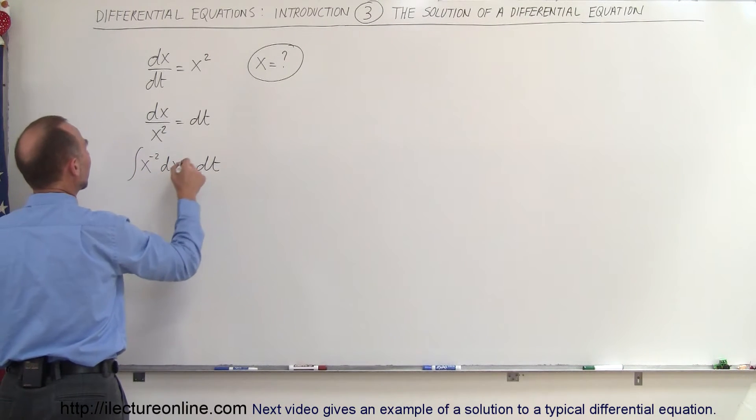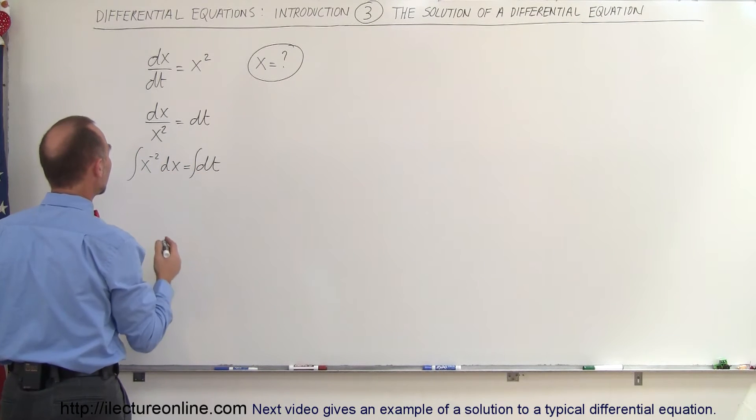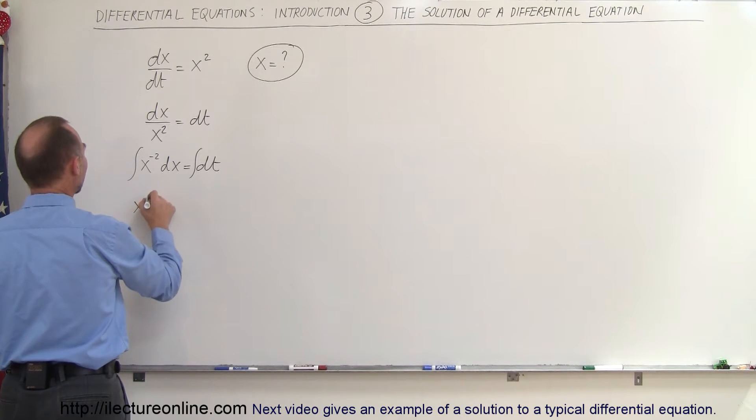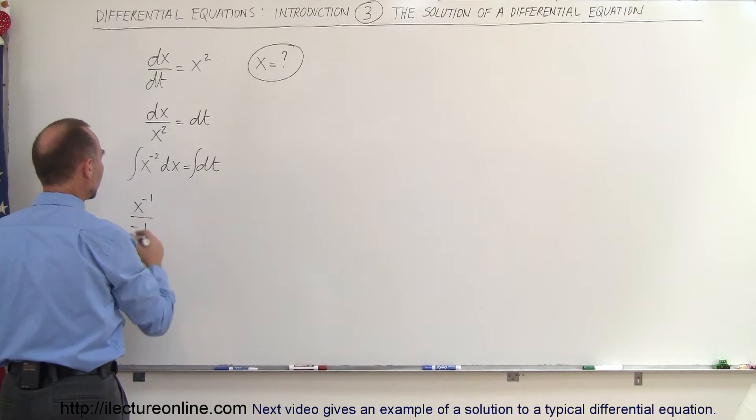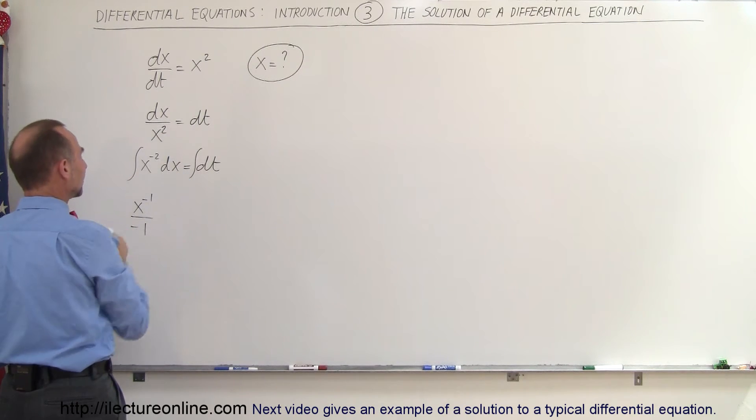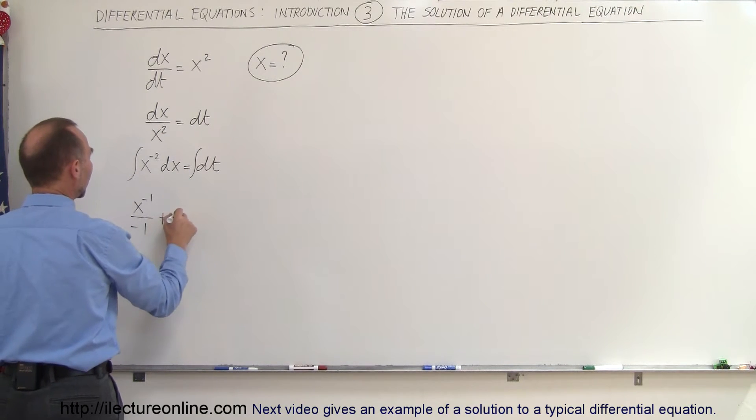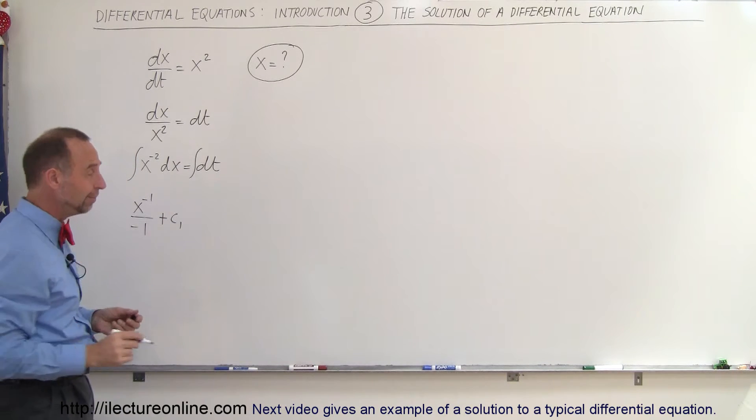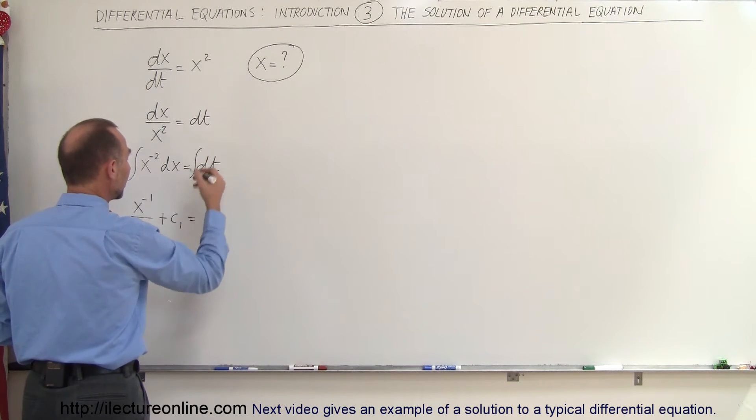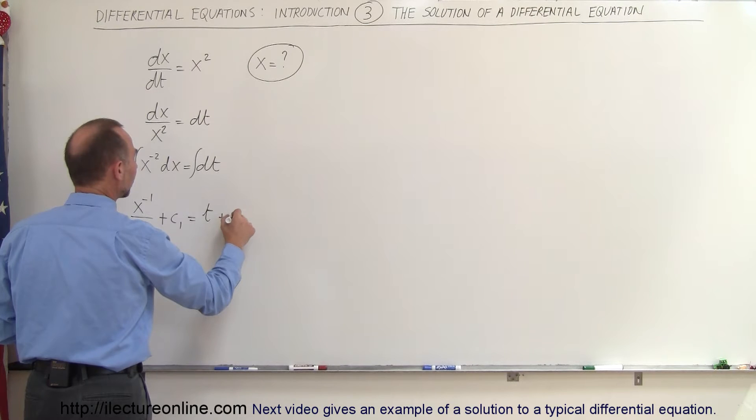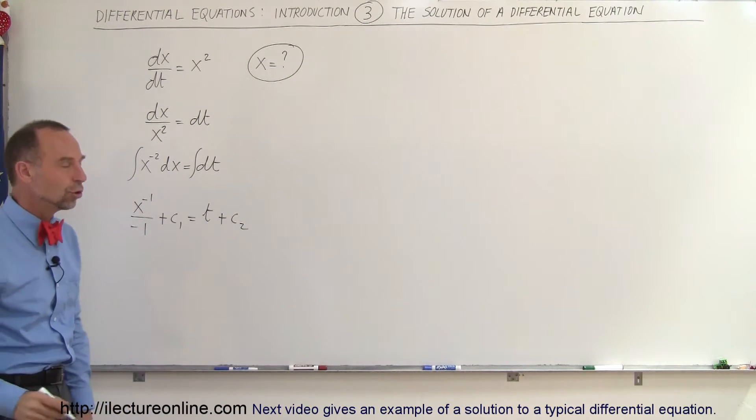So we integrate the left side and we integrate the right side. So that means that when we integrate this, we get x to the minus 1 divided by minus 1, so we add 1 to the exponent divided by the new exponent plus a constant of integration, let's call it c1. And that is equal to when we integrate that, we get t plus we add a constant of integration, we'll call it c2.